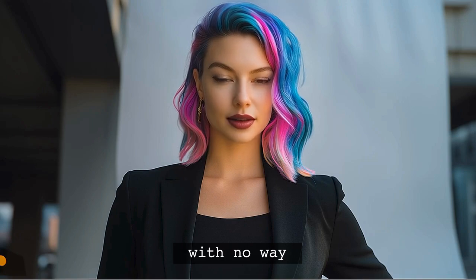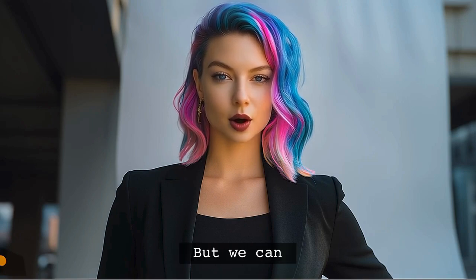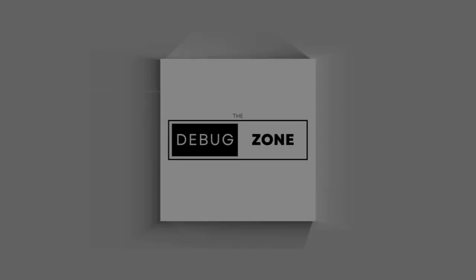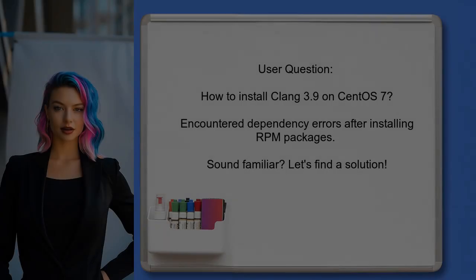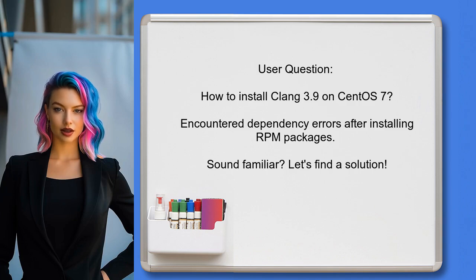It can feel like you're stuck in a maze with no way out. But trust me, we can navigate this together. Here's the situation: a user recently asked about installing Clang 3.9 on CentOS 7. They followed the steps to install the RPM packages but encountered several dependency errors. Sound familiar? Let's dive into the details and find a solution.